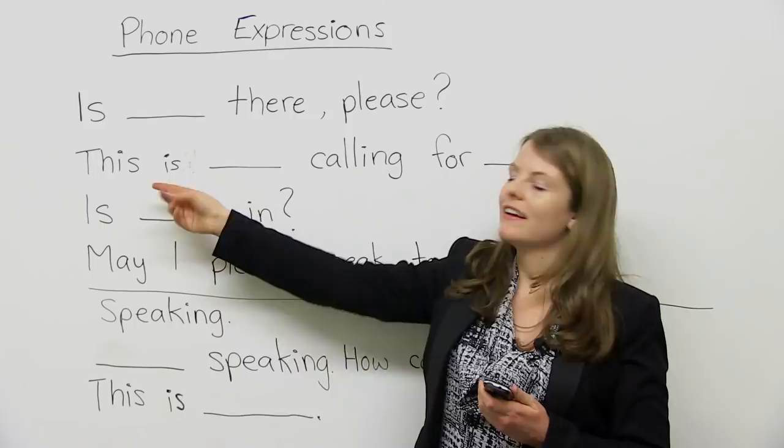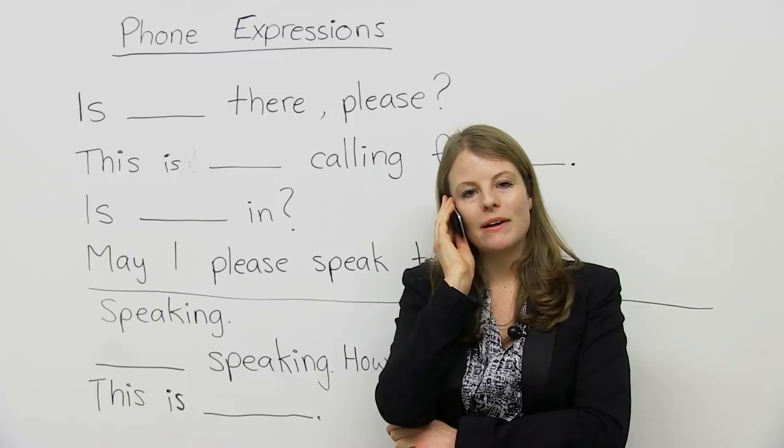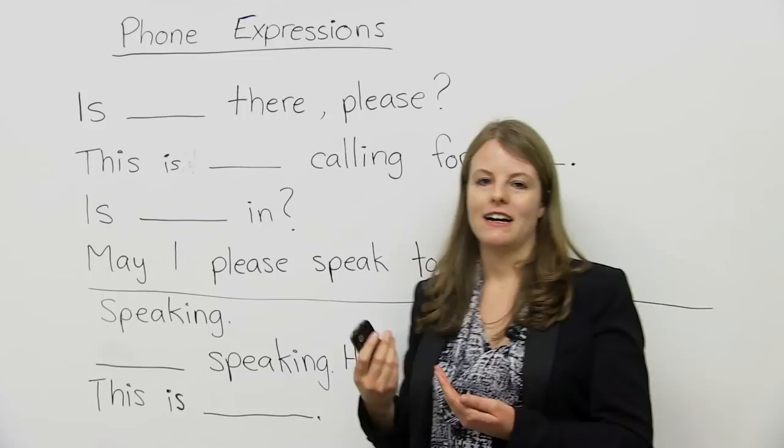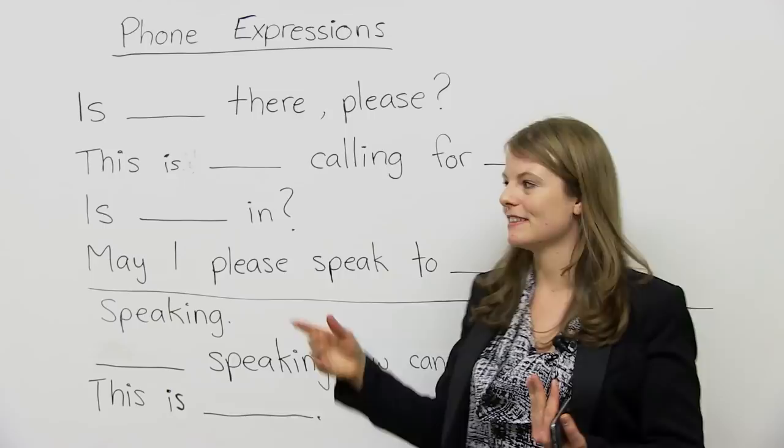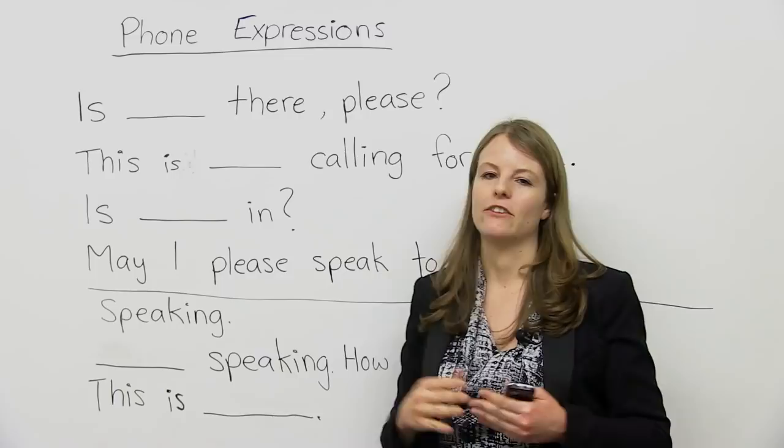You can also say, this is Emma calling for whoever you're calling. So if I'm calling you, I might say, oh, hello, this is Emma calling for Daniel. This is Emma calling for Joseph. This is Emma calling for Pete. So this is common. Especially if you're at work, this is the one we would use a lot at work. This one is a little bit more informal. You'd probably use this one more if you're calling your friends or calling someone in not a business situation.